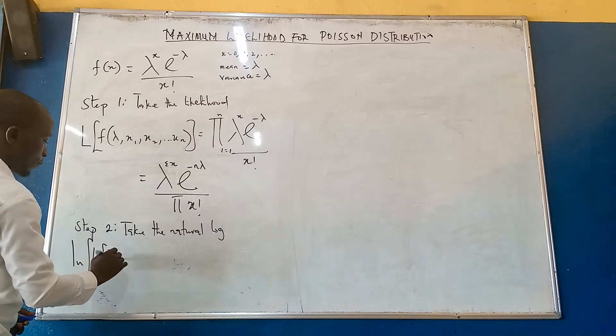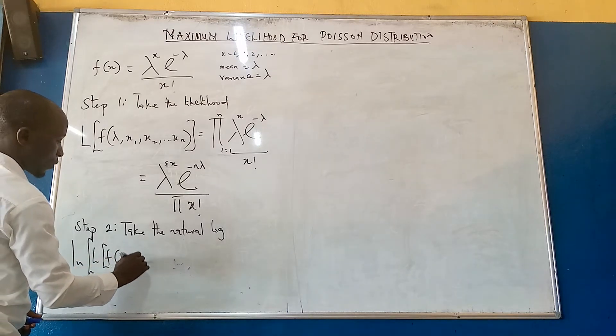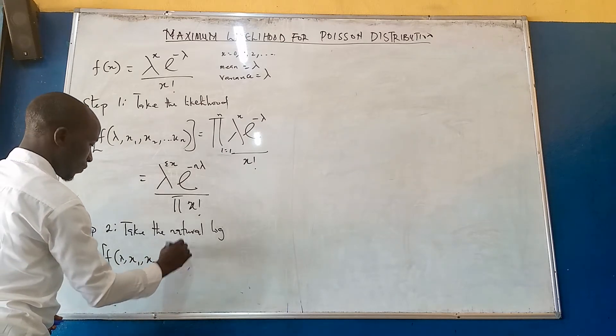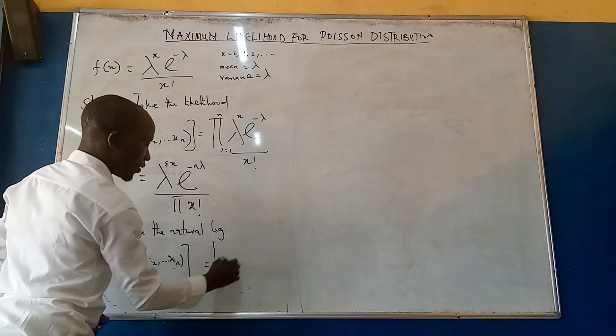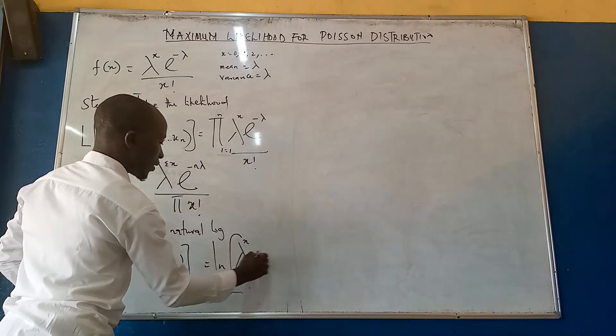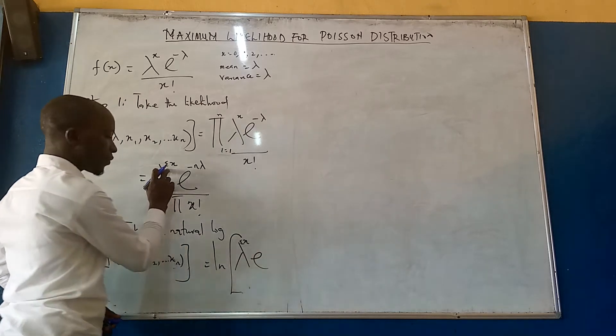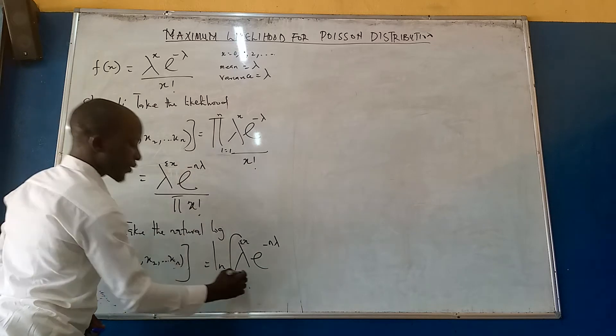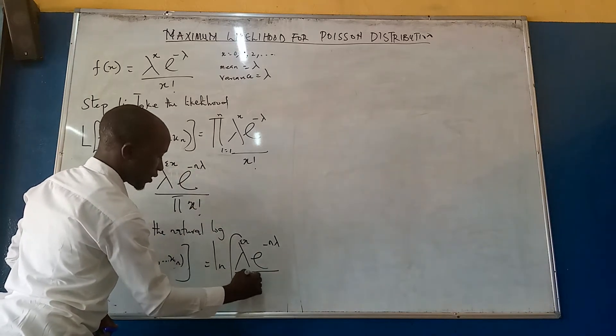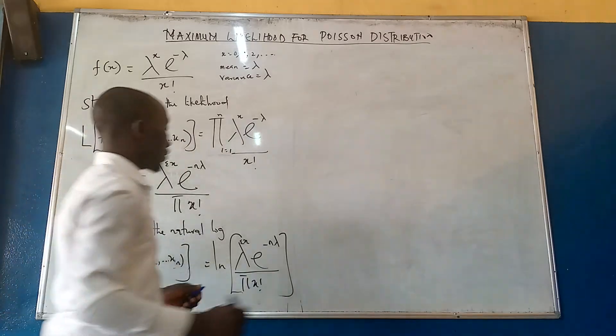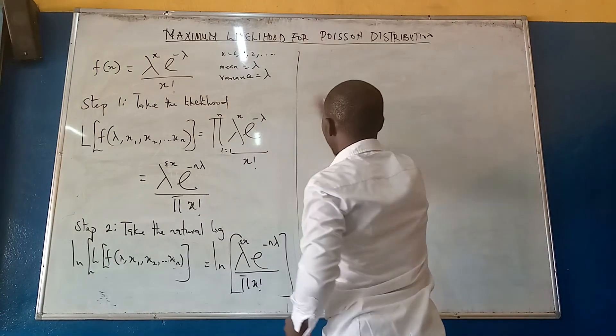of lambda, x1 comma x2 comma dot dot dot xn is equal to ln of the likelihood, which is lambda raised to summation x, exponential minus n lambda, divided by x factorial.